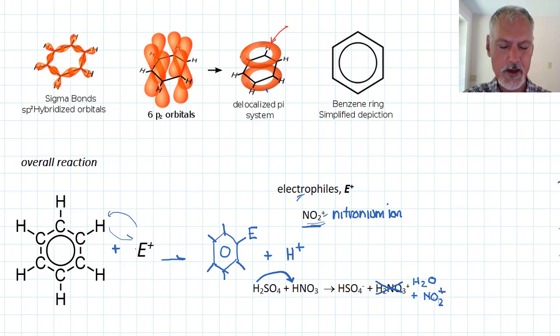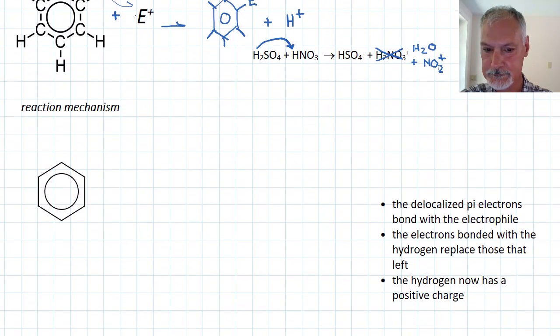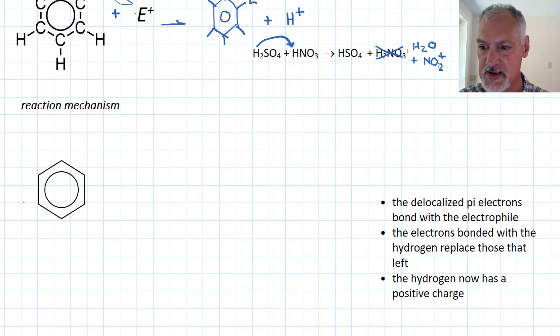Nitronium is quite often used as the example in electrophilic substitution reactions with benzene. Now, we have an idea of the overall reaction. Let's take a look at how the electrons move in the reaction mechanism.